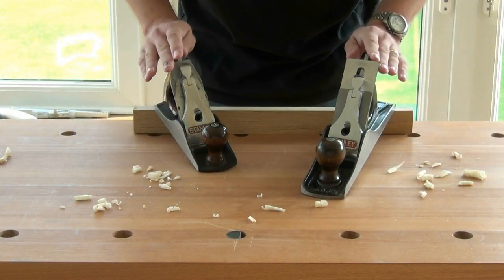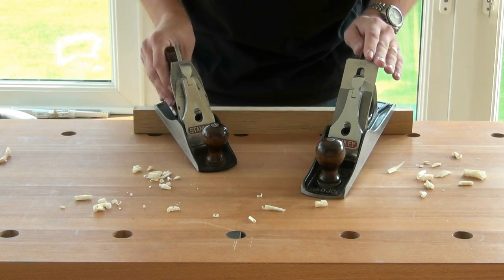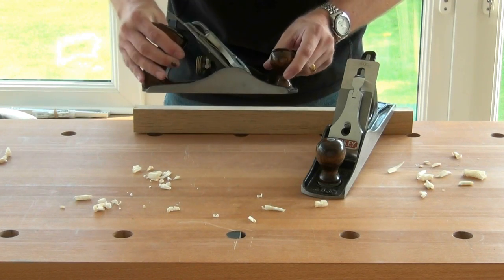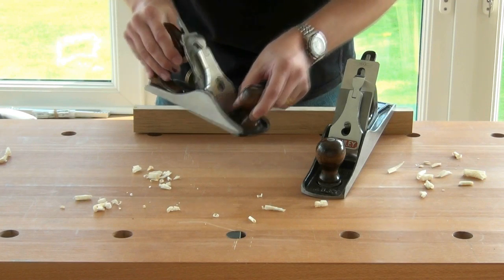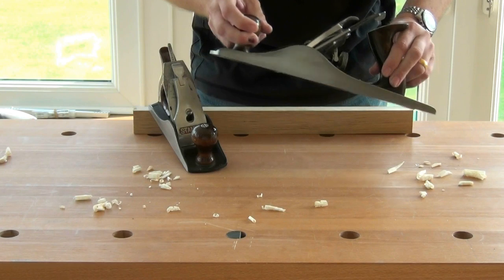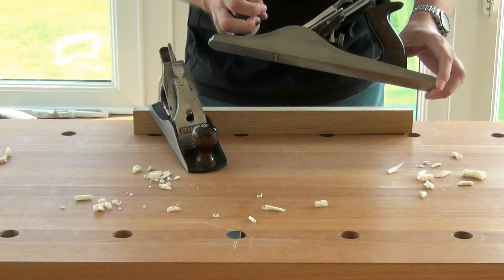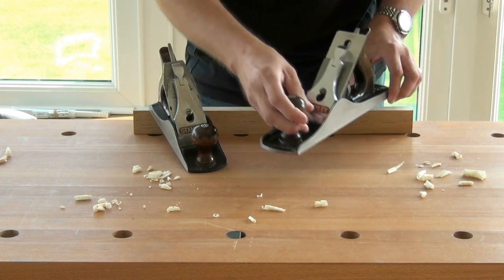The only difference between these two planes is the length of the sole. The number four being shorter is more useful for smoothing. The number five being the length of a component in a piece of furniture is more useful for preparing components.